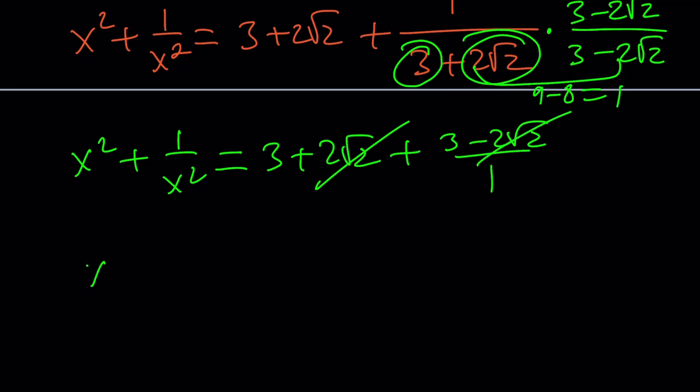We have two terms that cancel out, and x squared plus 1 over x squared becomes 6. Awesome. That's the answer.